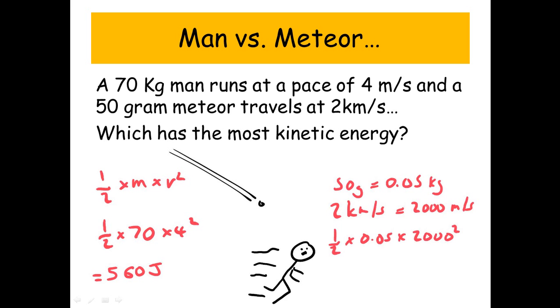We've got a half times 0.05 times 2,000 squared, and we get a huge 100,000 joules. So the meteor definitely has much more kinetic energy.